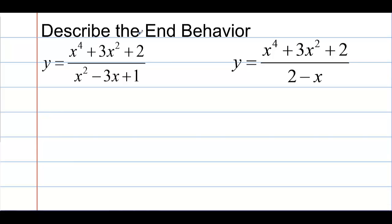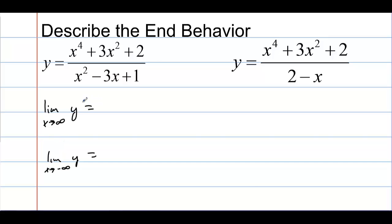Section 2.2: describe the end behavior. We have y equals this rational function right here. To describe end behavior, we're looking at the limit as x approaches infinity of y — way off to the right — and the limit as x approaches negative infinity of y, which is way off to the left. So we're looking at the end behavior: how does this function end?